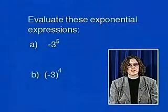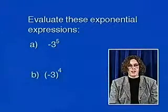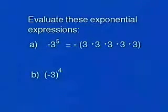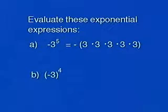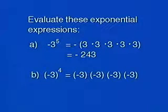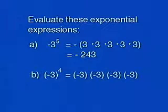Let's evaluate some exponential expressions. The opposite of three to the fifth equals the opposite of three times three times three times three times three, which is the opposite of 243. For part b, the base is negative three, so we have negative three written four times, and that product equals 81.